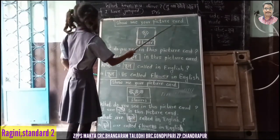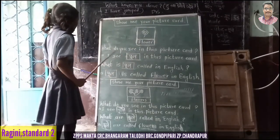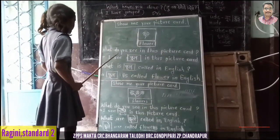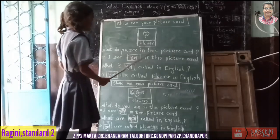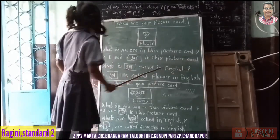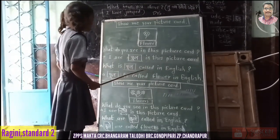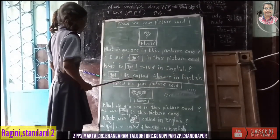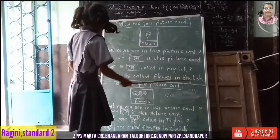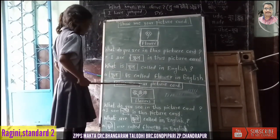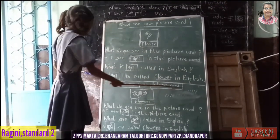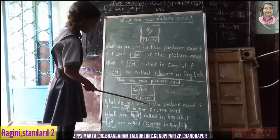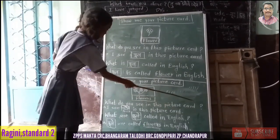Show me your picture card. What do you see in this picture card? I see pool in this picture card. What is pool? It's called in English. Pool is called flower in English. Show me your picture card. What do you see in this picture card?